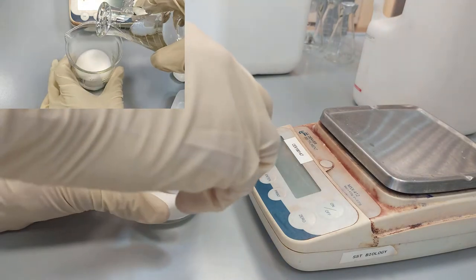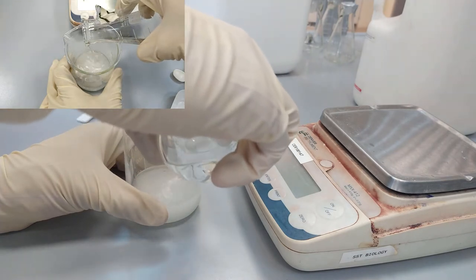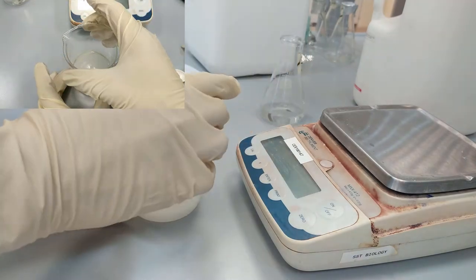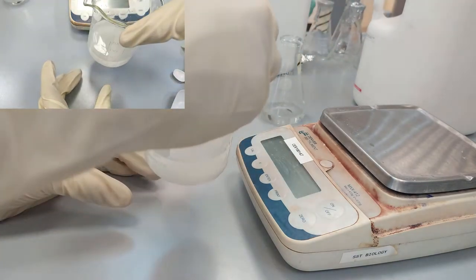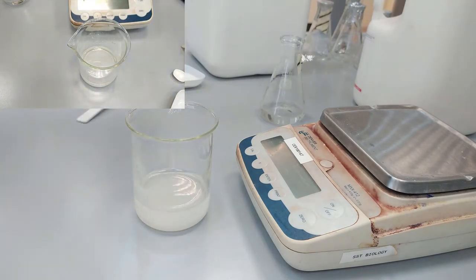Again, we add 50 milliliters first, mix the solution so it becomes homogeneous, and after that bring to the volume of 100 milliliters.